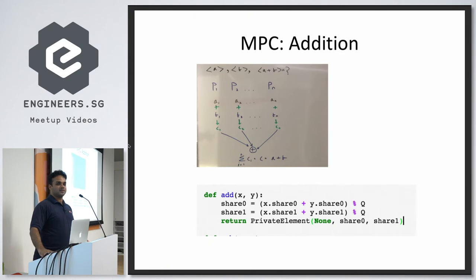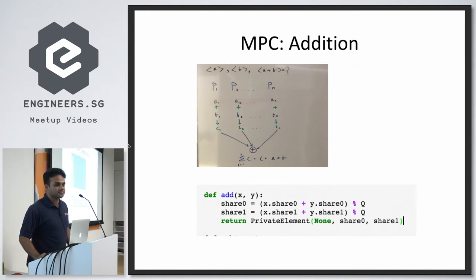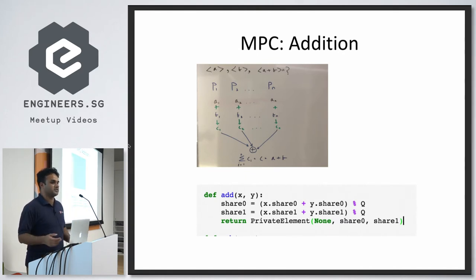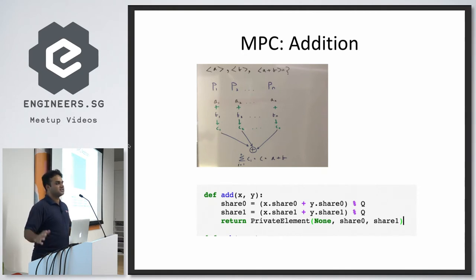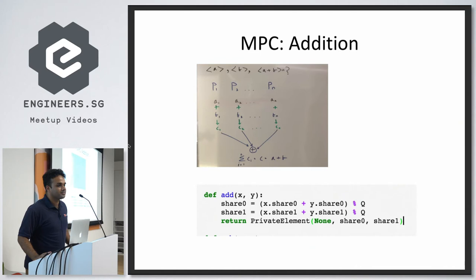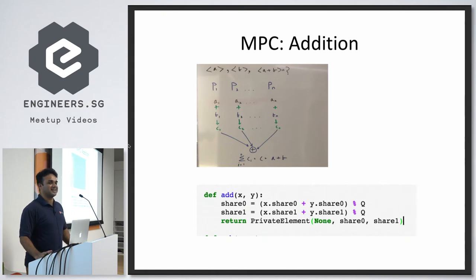Any questions so far? [Audience question about handling streams.] This can be any arbitrary piece of data however you wish to represent it — it's a very granular building block. You often need to quantize or fit data into a range, which does interact with the mod Q operation — I'll come to that.